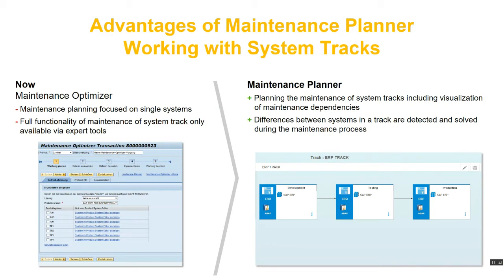As you can see from the screenshot, I've created a track called ERP track for the ERP systems and added ERP development, ERP test, and ERP production to that track. This feature helps eradicate inconsistencies between systems and ensures that all systems in that landscape are on the same support pack stack level.